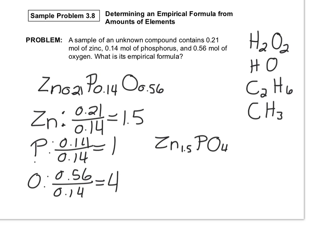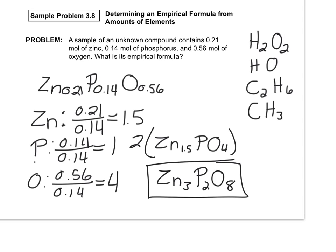So I have 3 zinc, 2 times 1 for phosphorus is 2, and 2 times 4 for oxygen is 8. The empirical formula is Zn3P2O8.